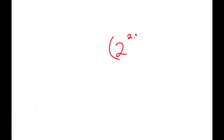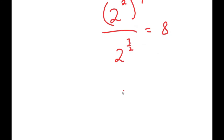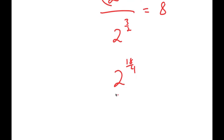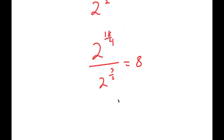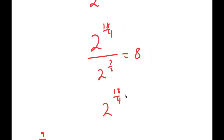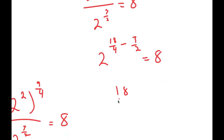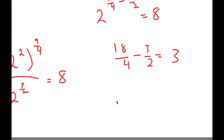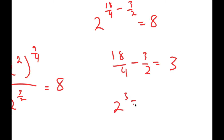2 times 9 over 4 is 18 over 4, so I get 2 to the power of 18 over 4 over 2 to the power of 3 over 2 equals 8. This gives 2 to the power of 18 over 4 minus 3 over 2 equals 8. Since 18 over 4 minus 3 over 2 equals 3, I get 2 to the power of 3 equals 8, and 8 equals 8. So this is correct.